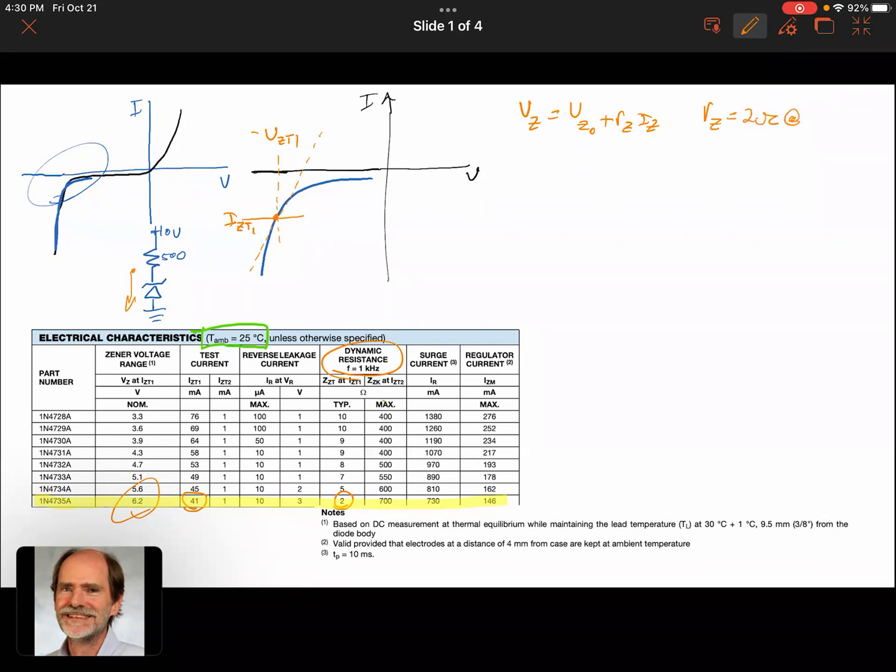So Rz is equal to 2 ohms at 41 milliamps. If we pick a different current, then we're somewhere else on this scale, right? So it's important to know precisely what that current is that we're looking at, and that's 41 milliamps. And in this case, Vz for that would be 6.2 volts.